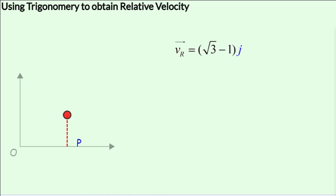A red ball starts off from point P with a uniform velocity, v_R, given as the square root of 3 minus 1, parallel to the y-axis.